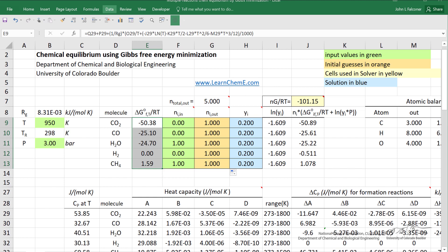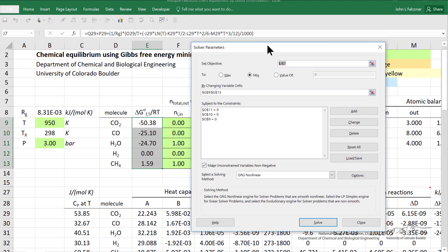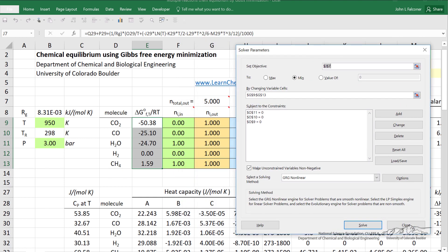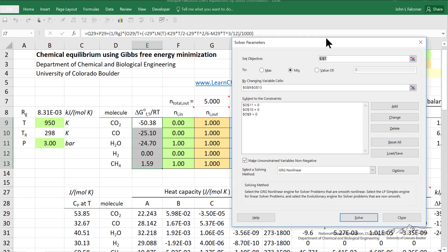So if I now go to Data, pick Solver, I've already entered the value that I want to minimize, minimizing the Gibbs free energy, the total Gibbs free energy. I'm doing it by changing these five cells for the moles leaving, and subject to the three constraints. The three constraints are the number of carbon atoms coming in and leaving has to be same, and the same for hydrogen and oxygen. Then I check this box here to make the unconstrained variables non-negative.